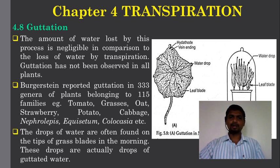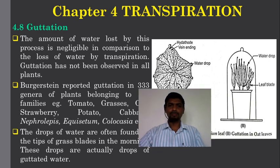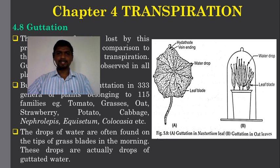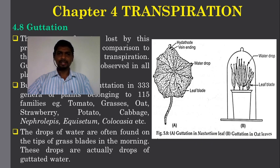Drops of water are often found on the tips of grass blades in the morning, and these drops are actually drops of guttated water. In the figure, a specialized structure called the hydathode is present at the tips of vein endings. In figure A, guttation is seen in the nasturtium leaf with drops at the margins of the leaf. In figure B, guttation in oat leaves shows drops of water at the tips of the leaf blade.